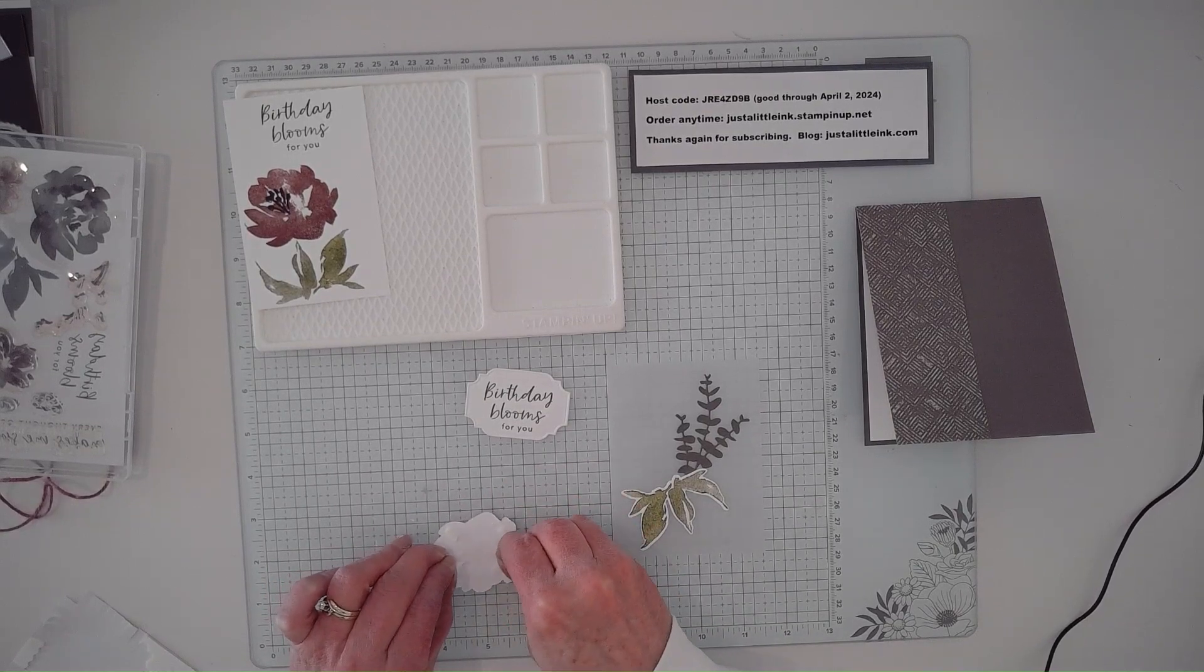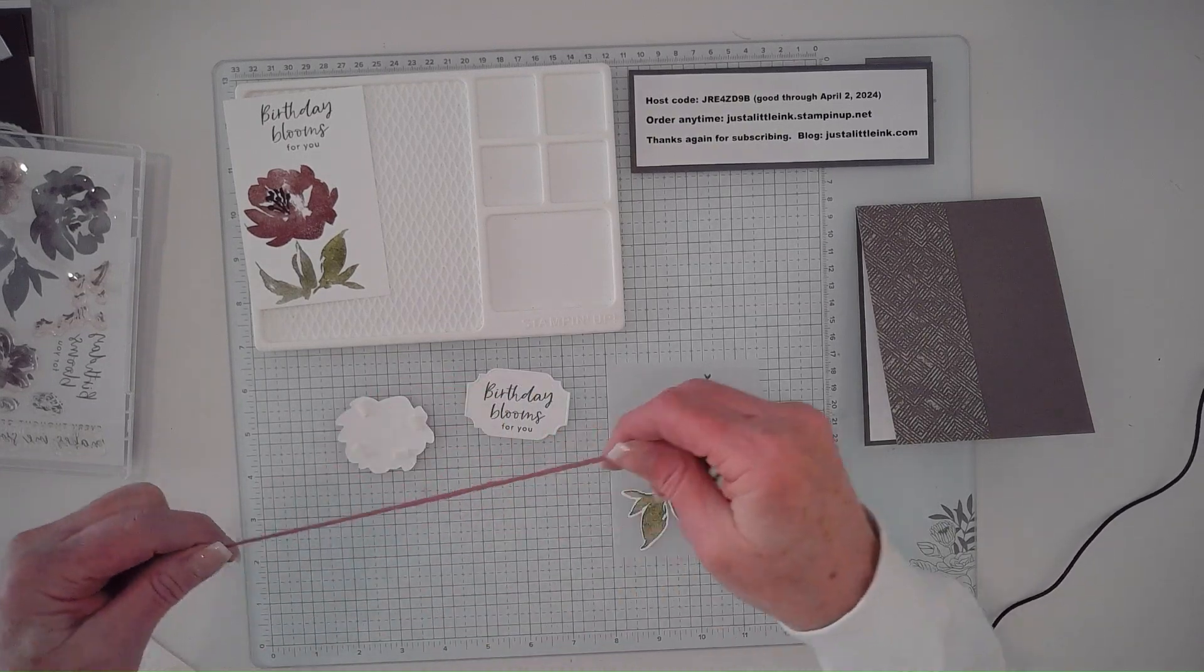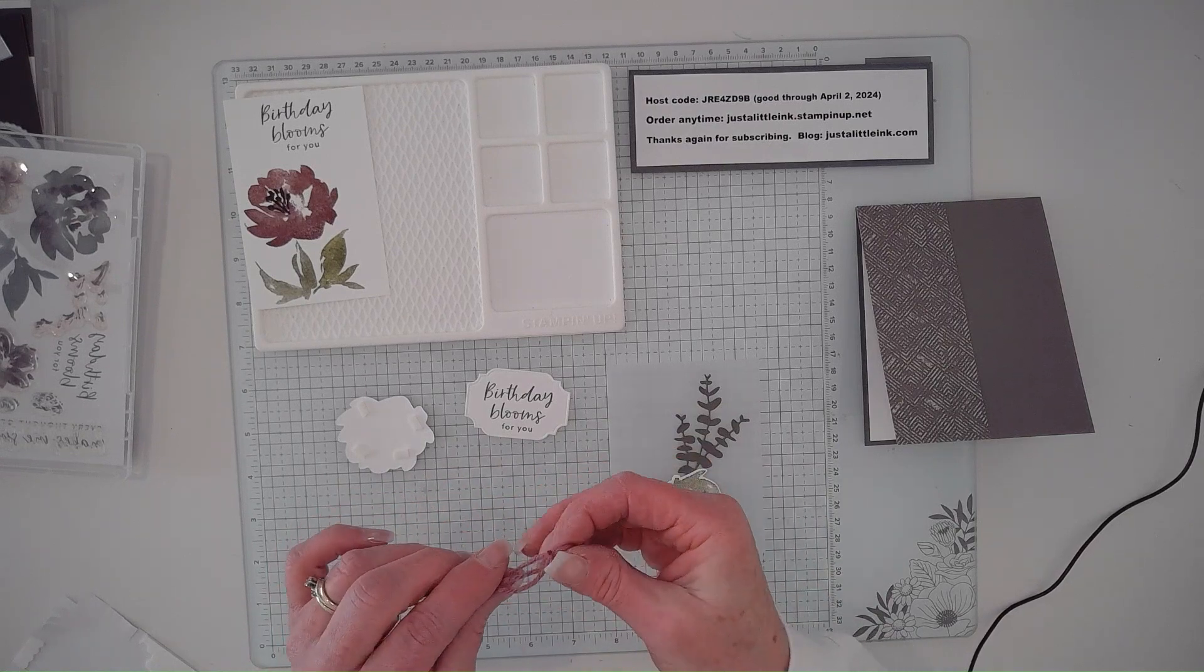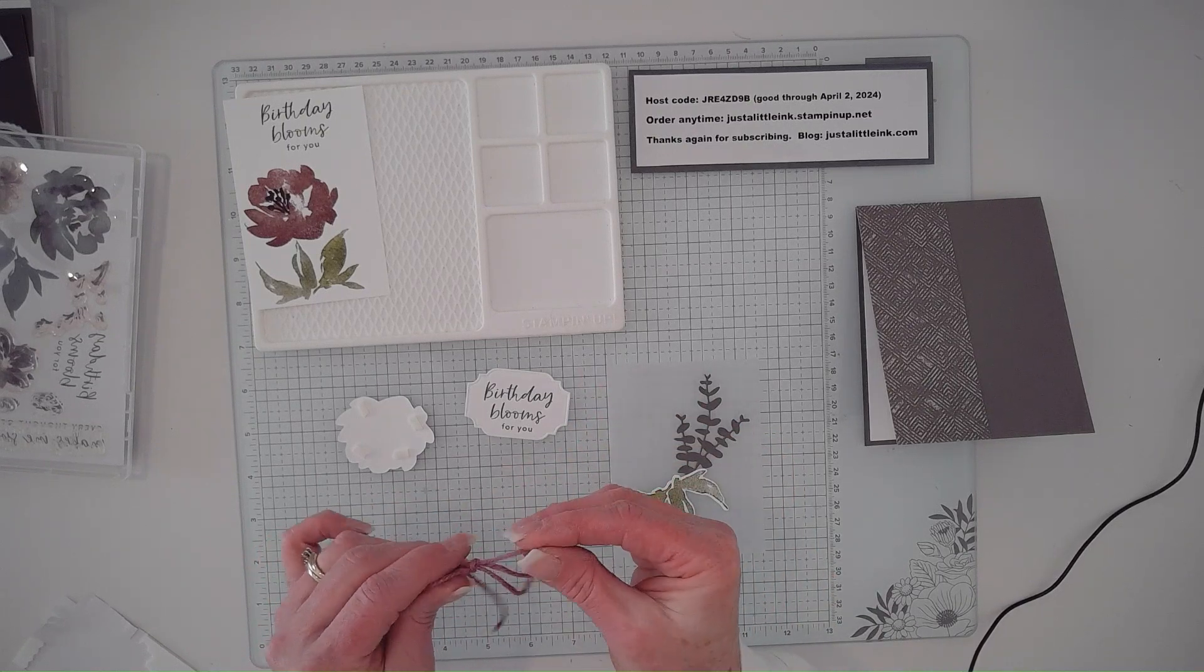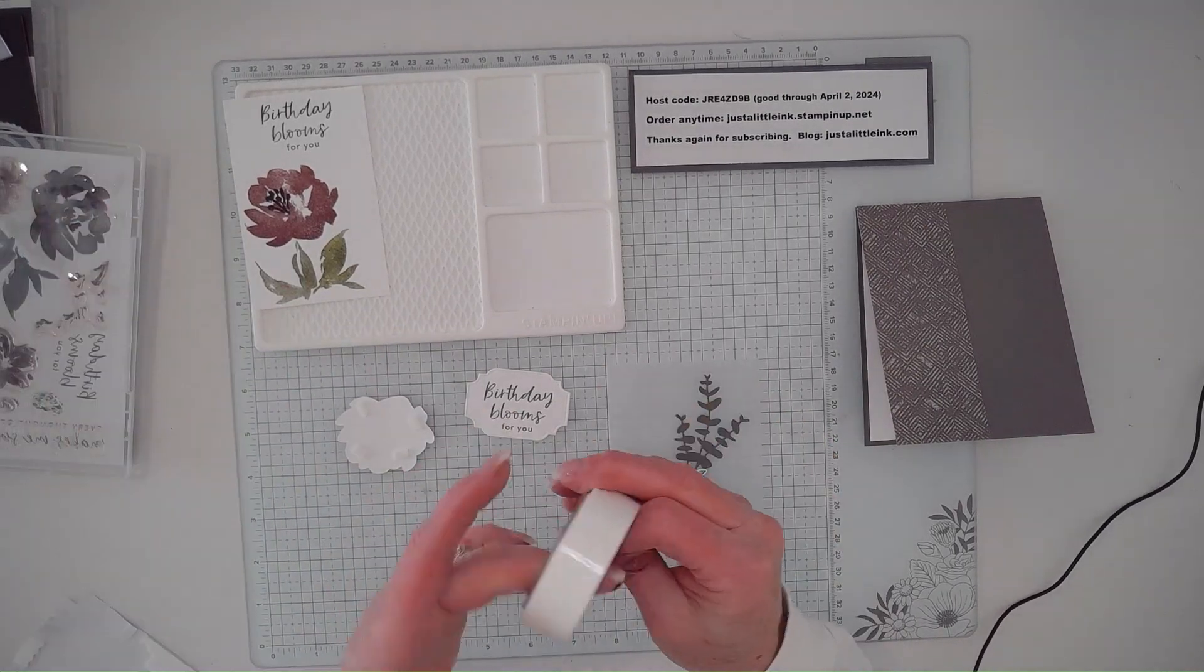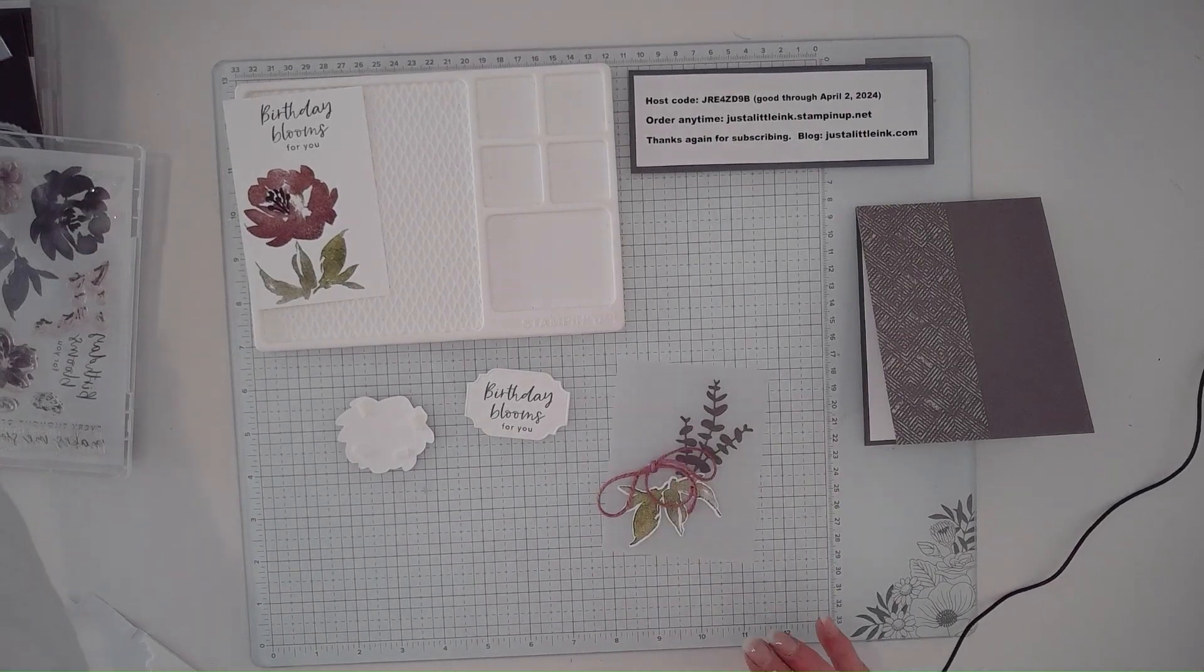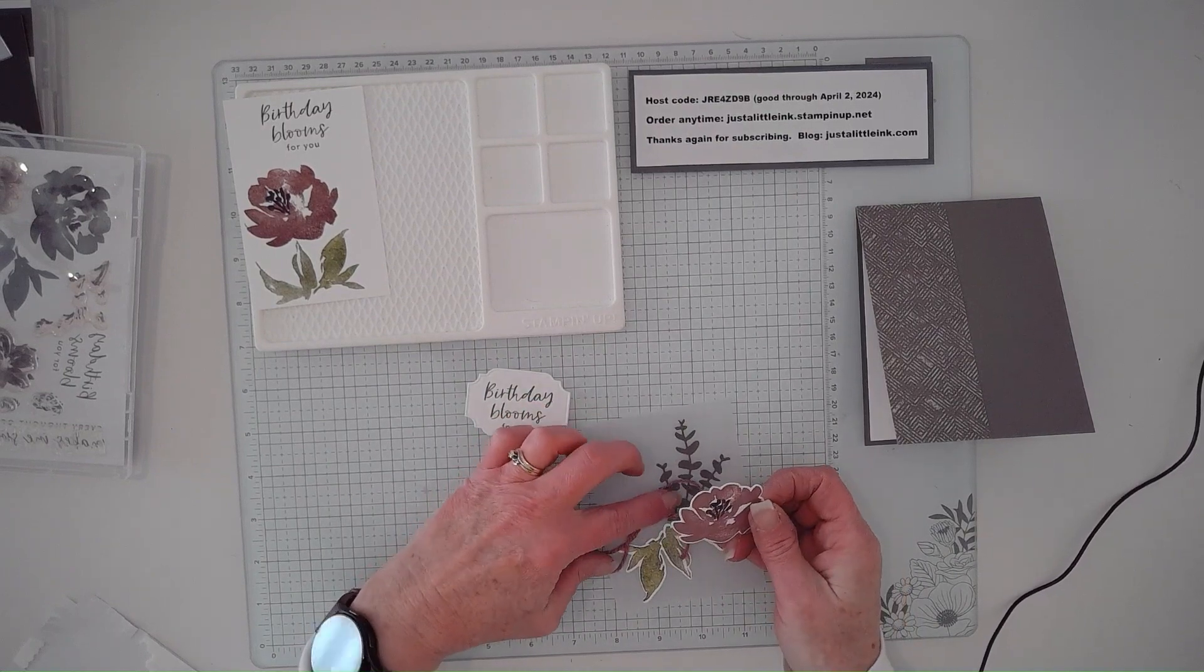I'm going to take and put dimensionals on the back. I want to grab my twine and I'm just going to make a bow with it. I liked having some of the loop show and some of the tails to show. I'm going to grab my glue dots, stick my twine to the glue dot, put it down, and push these up.